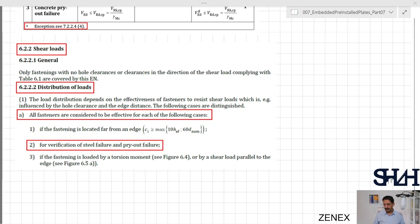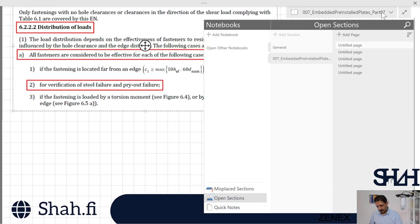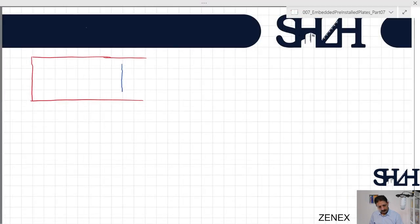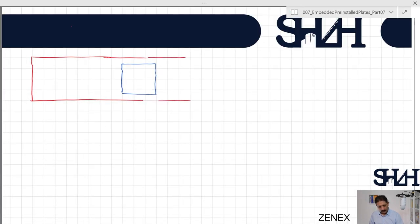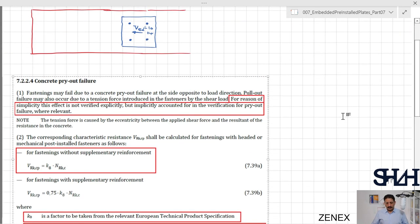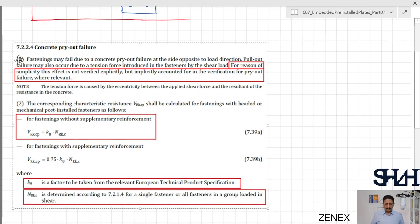In our case, we have a 300 by 300 plate from PECO with four fasteners and shear force is 10 kilonewtons. Pry-out failure is very straightforward, it's a very simplified method.